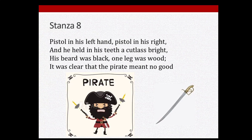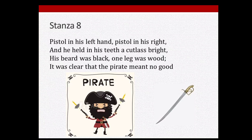The next stanza describes how the pirate looks: 'Pistol in his left hand, pistol in his right, and he held in his teeth a cutlass bright. His beard was black, one leg was wood — it was clear that the pirate meant no good.' The pirate had pistols in both hands and held a short, bright sword in his teeth. He had a black beard and a wooden leg, and it was obvious from his appearance that he had come to do harm.